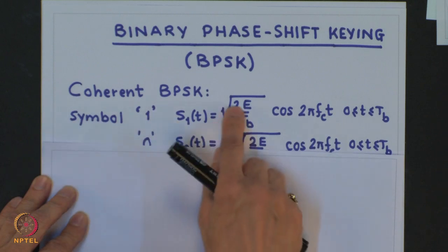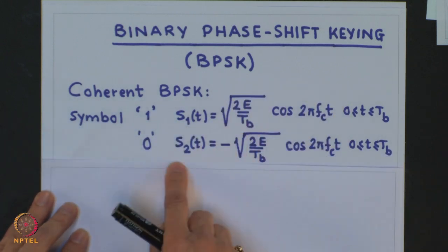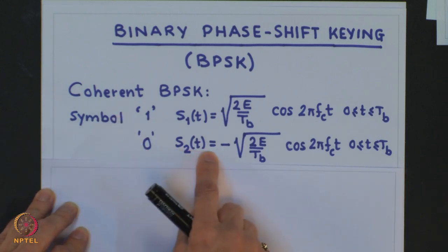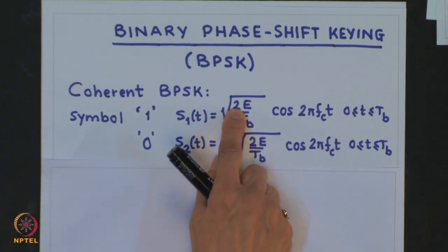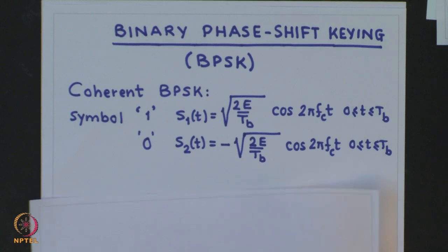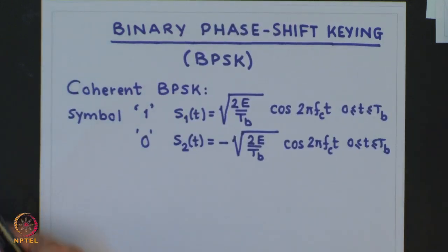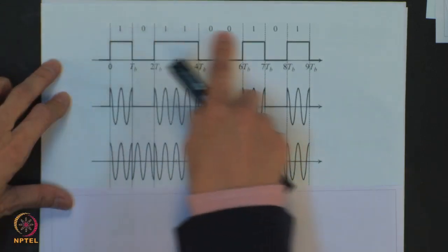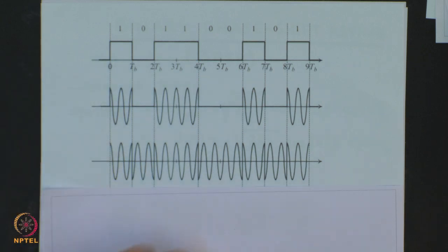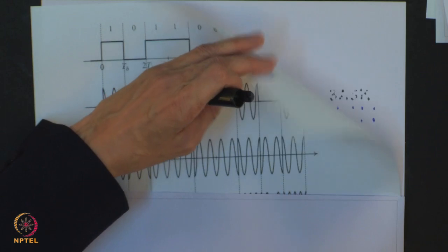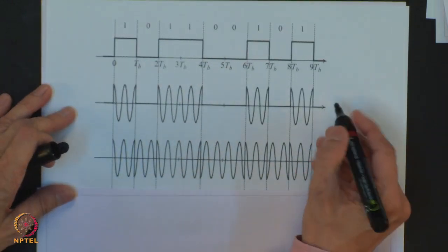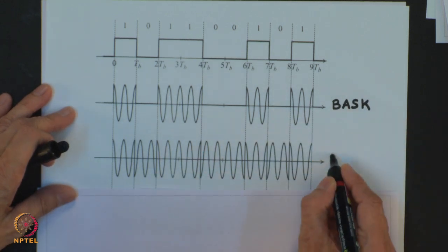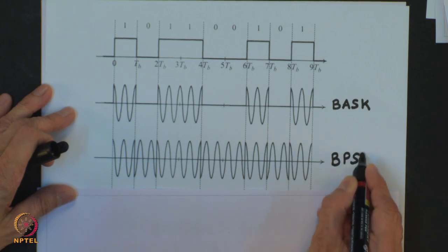For symbol 1 I have the signal S1(T), and for symbol 0 I have S2(T) which is just the negative of S1(T). The BPSK waveform for the same digital data is shown here. Earlier we saw binary ASK; now this is binary PSK.